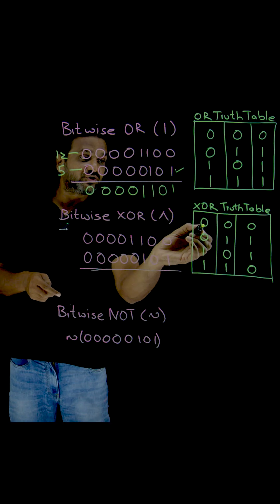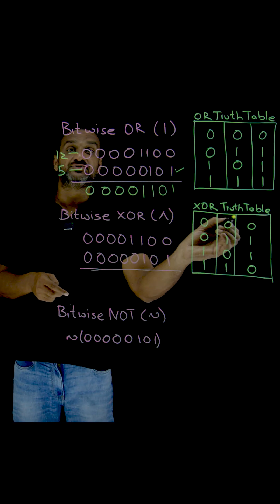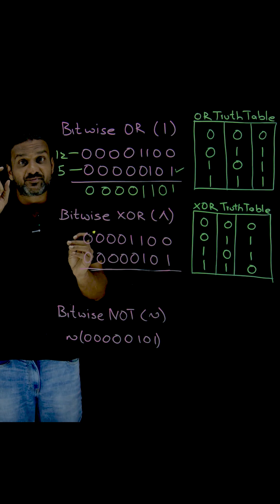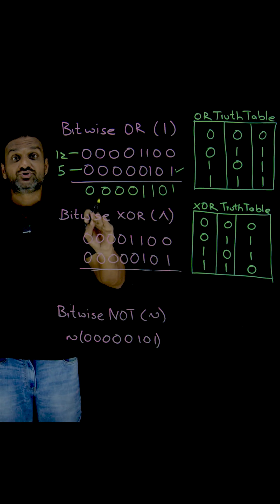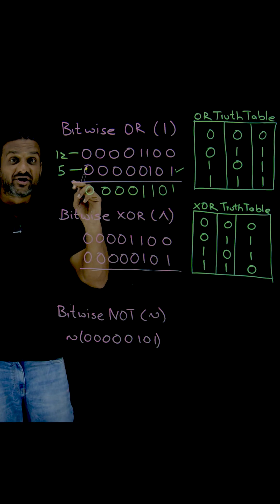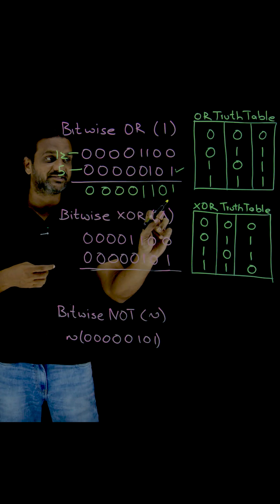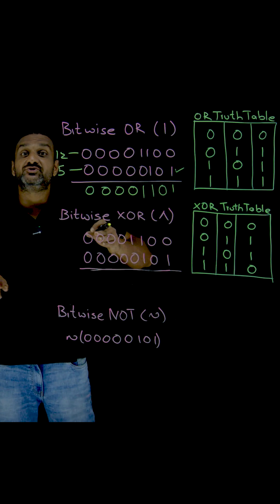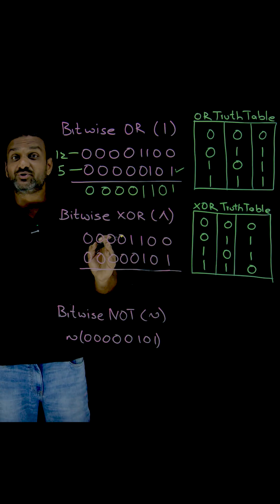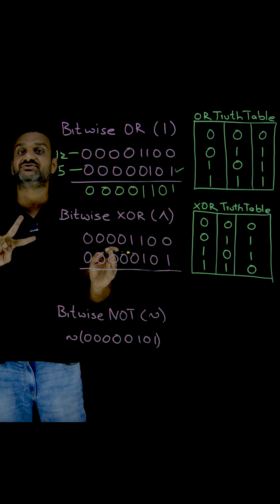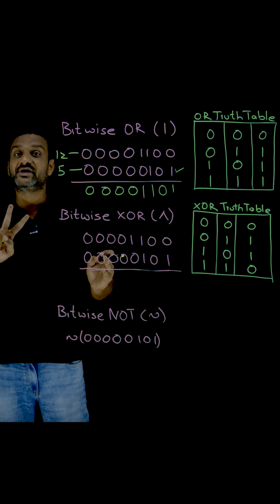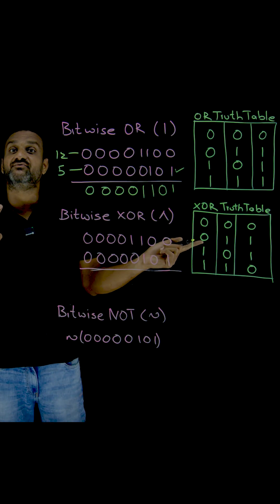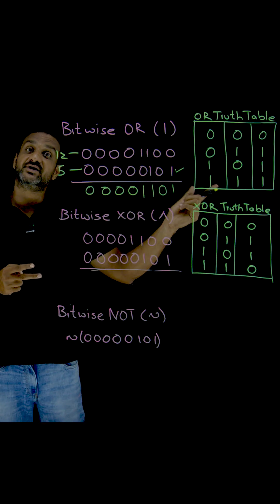See the truth table of XOR. The logical understanding of this exclusive OR is very important. The logic is: if both the bits are the same, produce an outcome of zero. If both the bits are different — meaning one is zero and the other is one — then we are going to get an outcome of one.